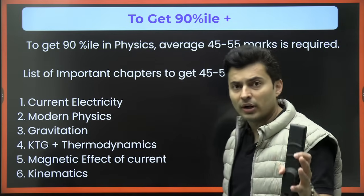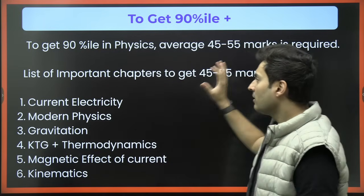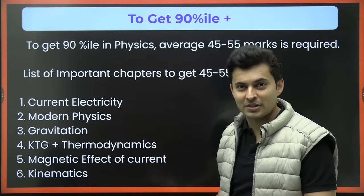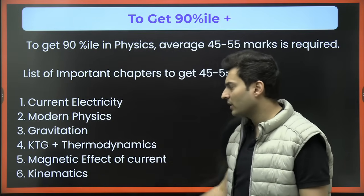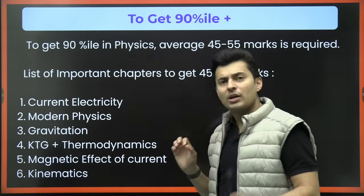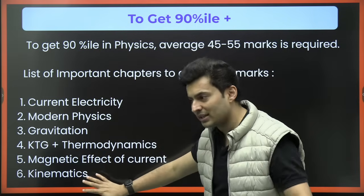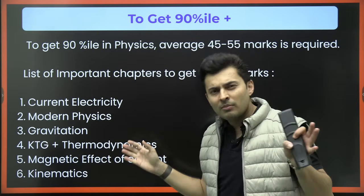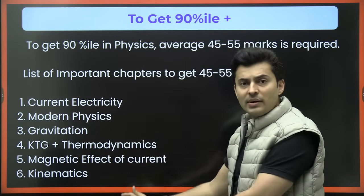Now that you know the important topics — what do you need specifically for 90 percentile? For 90 percentile, study only these chapters: current electricity, modern physics, gravitation, KTG and thermodynamics, magnetic effects of current, and kinematics. If you don't want to do magnetic effects of current, you can substitute it with units and dimensions or another medium-weighted chapter. Just these six chapters are enough for 90 percentile — but try to be very accurate, with no more than one or two mistakes.